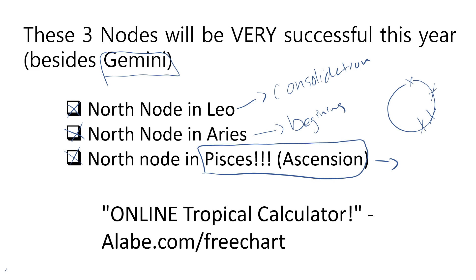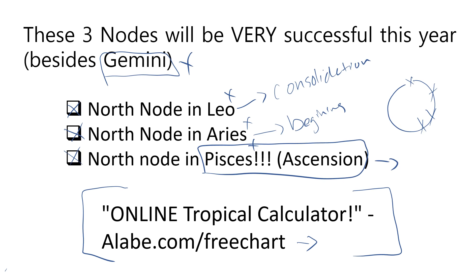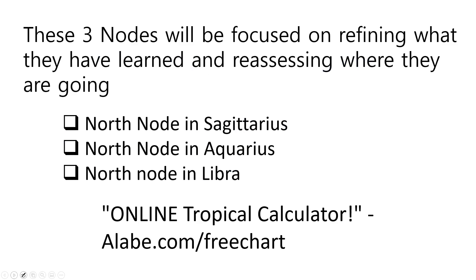If you're a Gemini, Leo, Aries, or Pisces in terms of Sun, Moon, Rising, Venus, or Mars, these alignments are going to be very important for you. You want to pay attention to what's going on in your chart. If you're not sure about your chart, you can check out alabe.com/freechart — that's a free online tropical calculator. Find out where your North Node is and where all your other transits are. If they're in these signs, things are going to pick up for you in the area of your life that those signs govern.